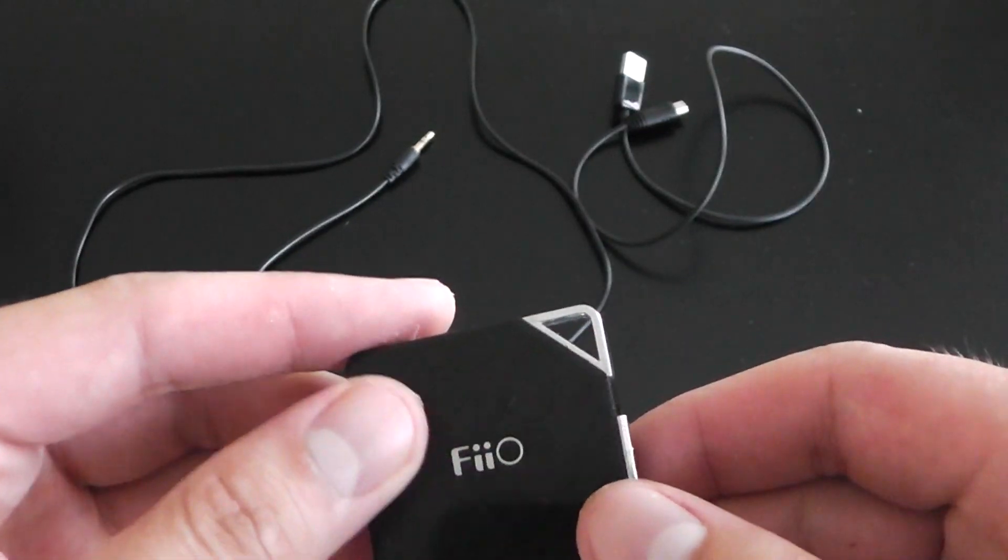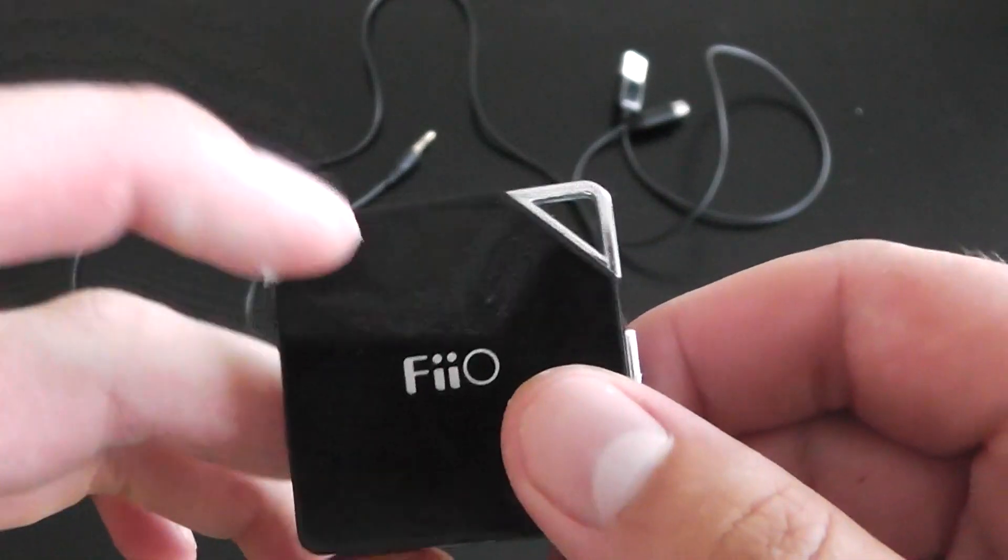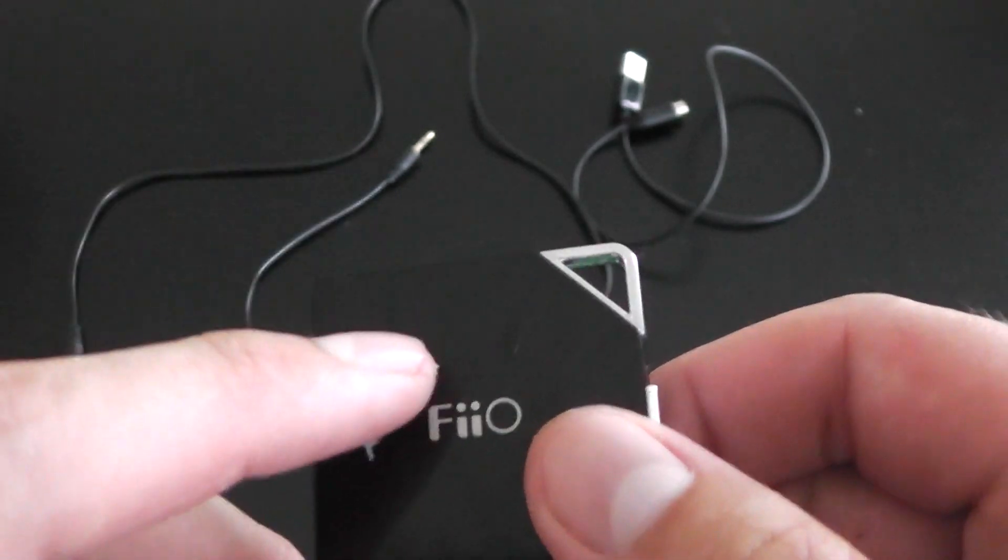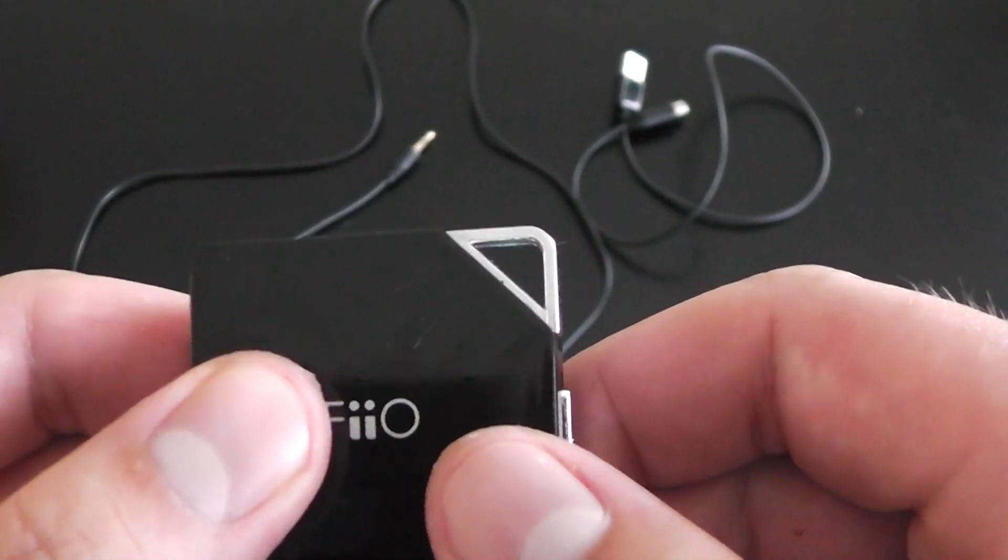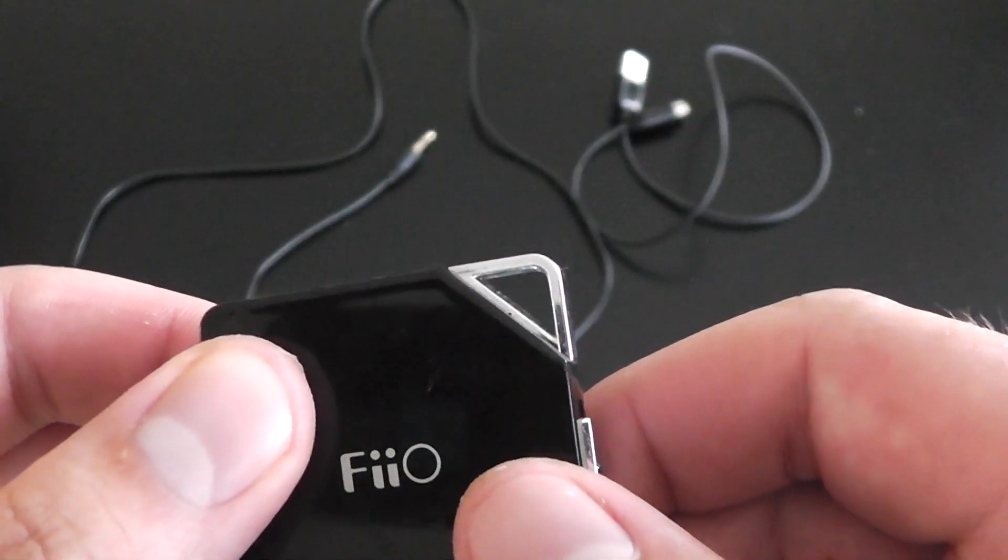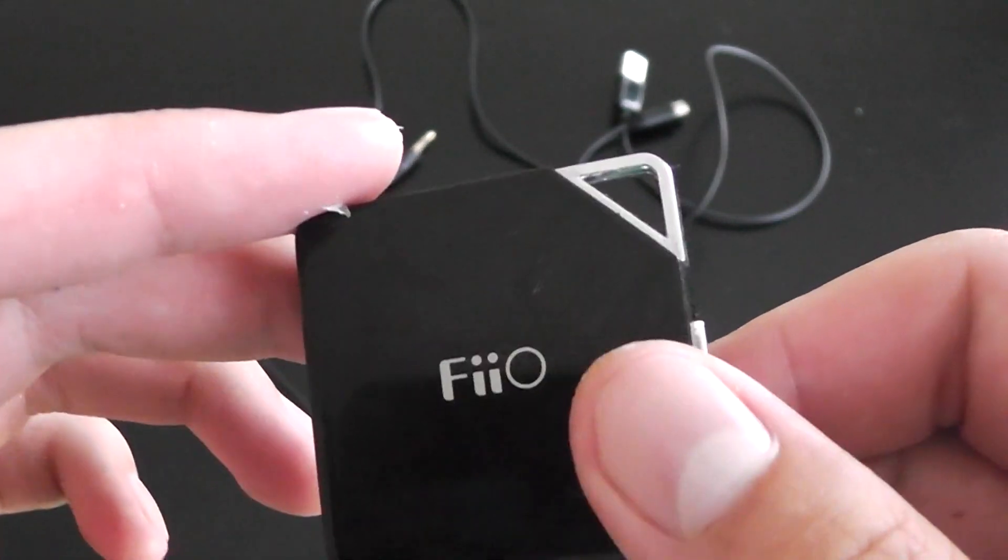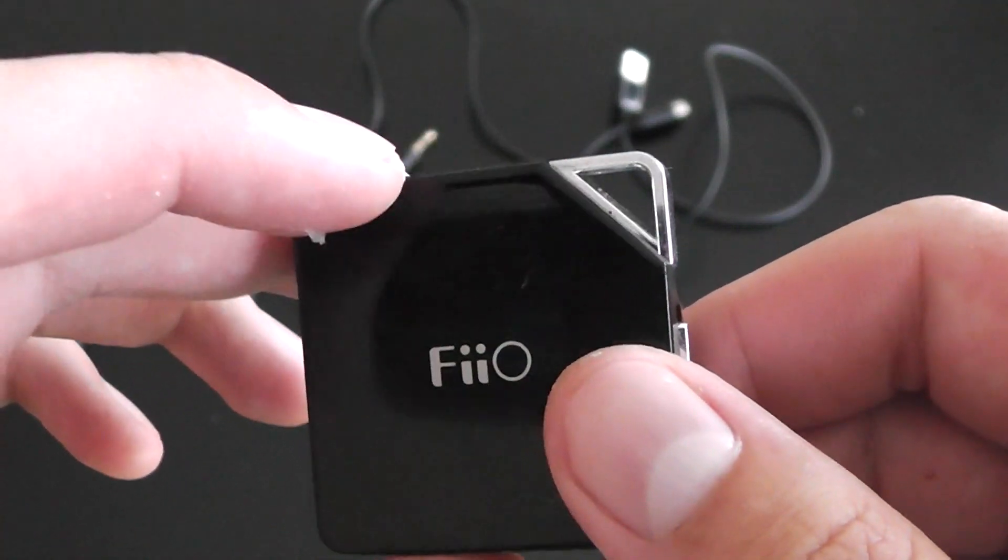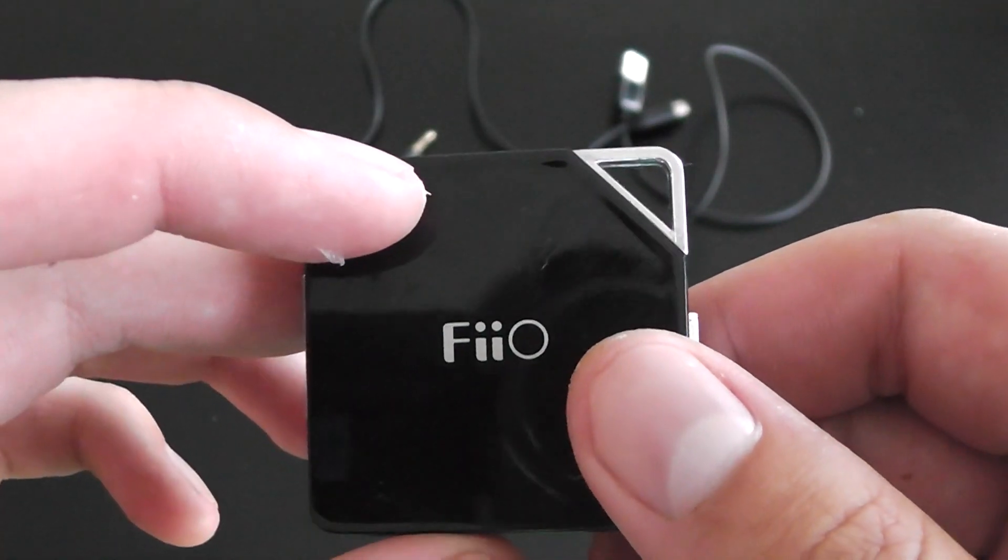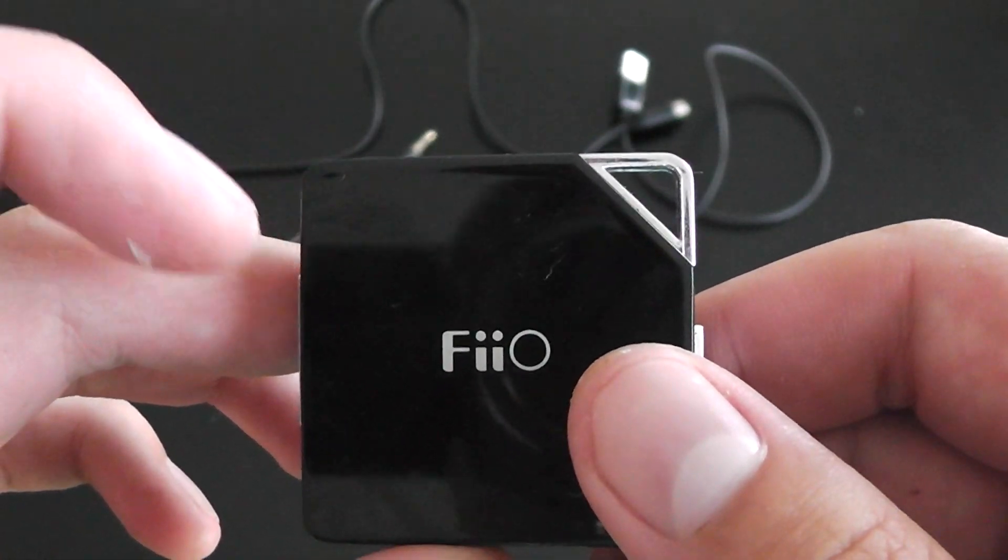Let me get into the review now. This product, unlike the FiiO E5, the predecessor to this one, this one is made of plastic. The FiiO E5 is made of a metal material, made of metal. So the metal is obviously more durable and it'll last longer.